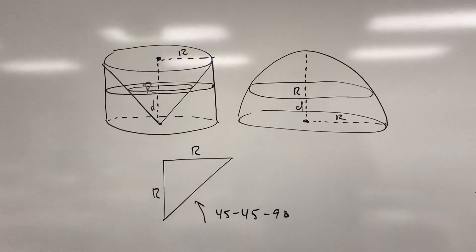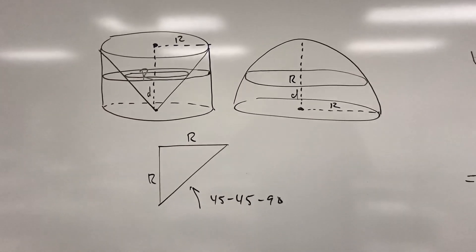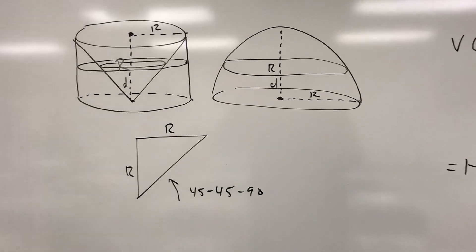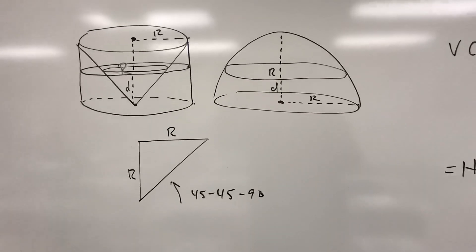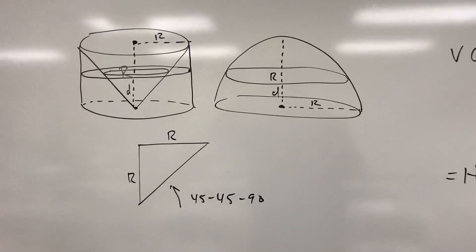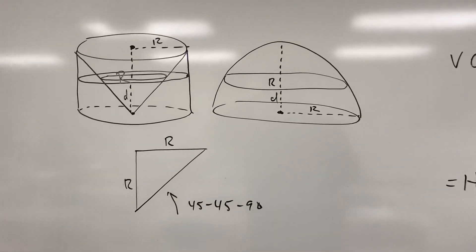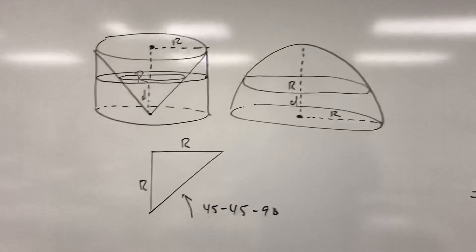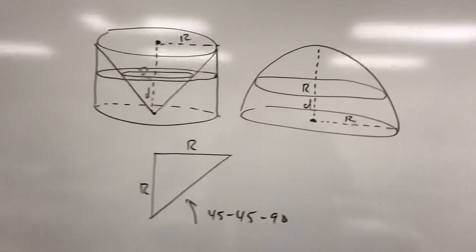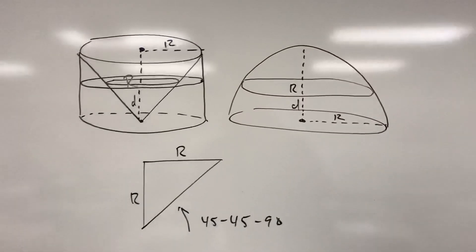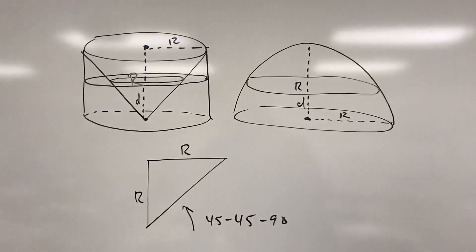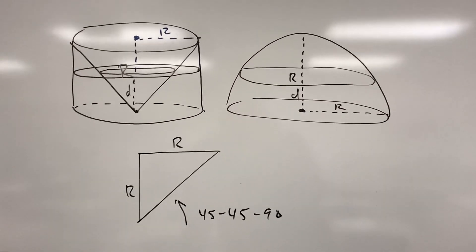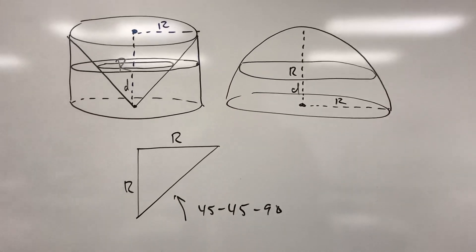This is just a little proof of the volume of a sphere formula. Of course, hopefully we know that the volume of the sphere is 4/3 π r³, so we know what we're shooting for. The idea here is to use something that we know how to find the volume of to find something that we don't know how to find the volume of.